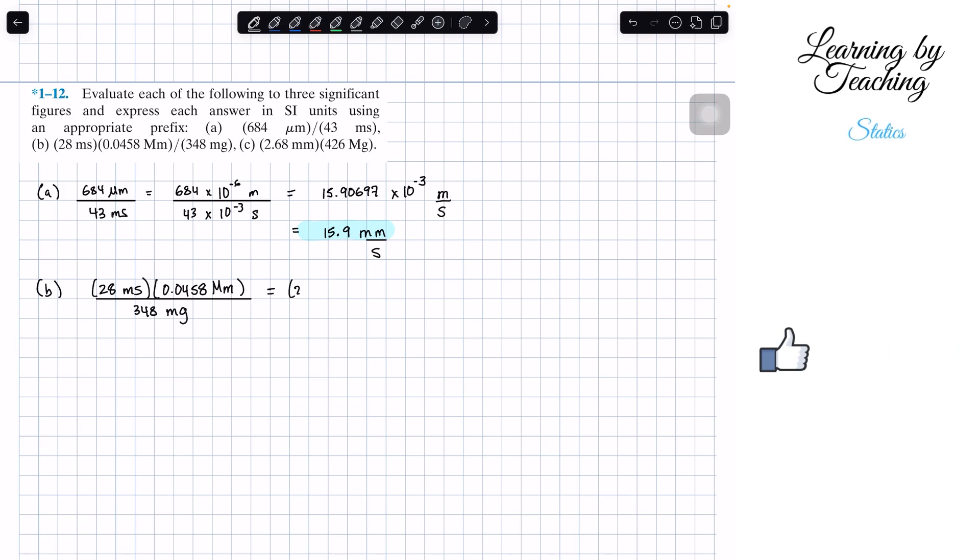We're going to have 28 times 10 to the negative 3 seconds, multiplied by 0.0458 times 10 to the positive 6 meters, and all of this divided by 348 times 10 to the negative 3 grams. The first thing I want to point out is we got a 10 to the negative 3 and 10 to the negative 3, one on top, one at the bottom. So we can just cross them out, cancel them out.